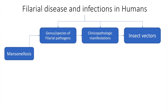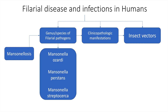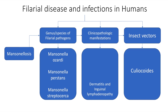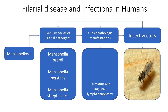Finally, mansonellosis is caused by Mansonella ozzardi, Mansonella perstans, and Mansonella streptocerca. The clinico-pathologic manifestations for Mansonella streptocerca are dermatitis and inguinal lymphadenopathy. The insect vector is Culicoides, which looks like this.